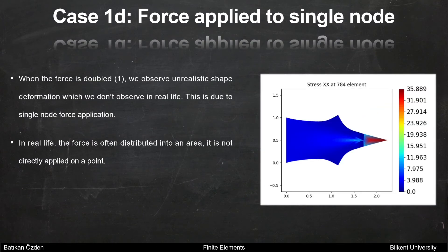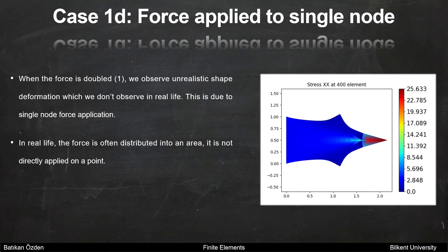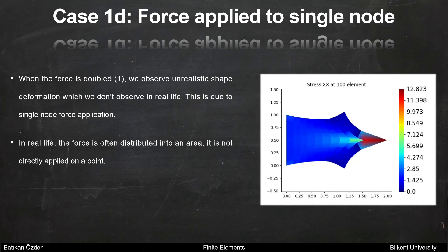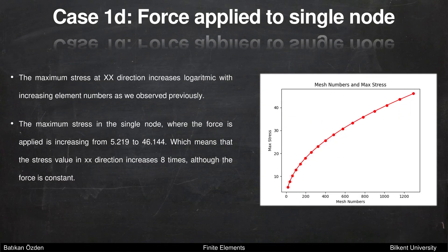For case 1d, we repeat case 1c but apply a force of 1. We observe unrealistic shape deformation, which we don't see in real life — this is due to single-node force application. In real life, the force is often distributed over an area, not applied directly on a point. The maximum stress in the single node where the force is applied increases from 5.2 to 46.1, meaning the stress in xx direction increases 8 times although the force is constant.